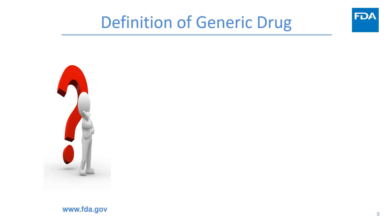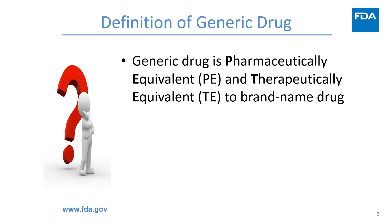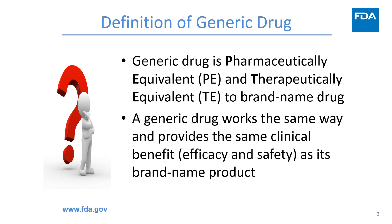The mission of the Department of Lifecycle API is to review generic drug substance master files. A generic drug is pharmaceutically equivalent and therapeutically equivalent to a brand name drug. A generic drug works the same way and provides the same clinical benefit, including efficacy and safety, as its brand name product.